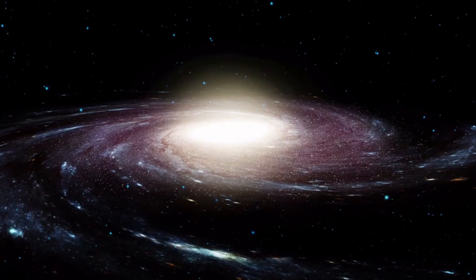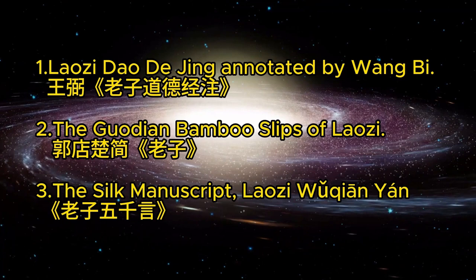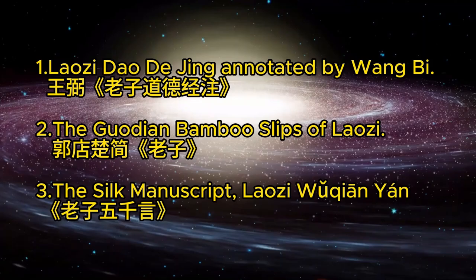1. Lao Tzu Tao Te Ching annotated by Wang Bi. 2. The Guadian Bamboo Slips of Lao Tzu, unearthed in 1993 in Guadian, Hubei province. 3. The Silk Manuscript, Lao Zi Wu Qian Yan, unearthed in 1974 from the mausoleum at Mawangdui in Hunan province.